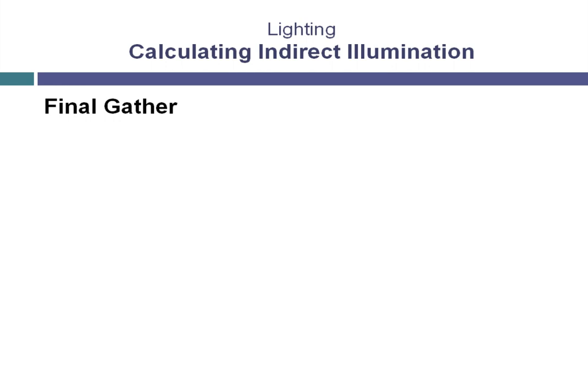The process of calculating indirect illumination in 3ds Max called Final Gather is the first form of indirect illumination that you should try to use. It provides a straightforward method by which you can get satisfactory results from your rendered scenes. Final Gather tends to be a very efficient method of calculating the indirect illumination in your scene, and it's relatively flexible and offers you choices to make adjustments that allow you to optimize your rendered image.